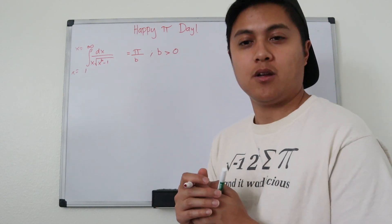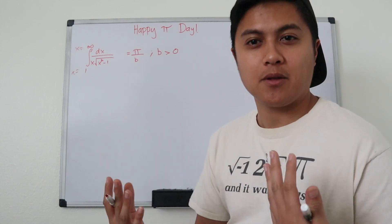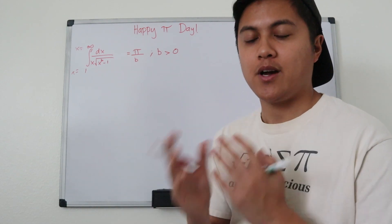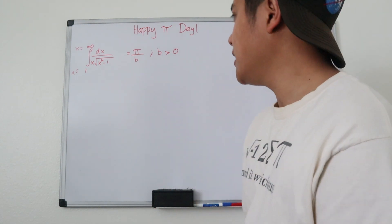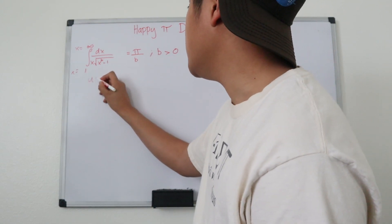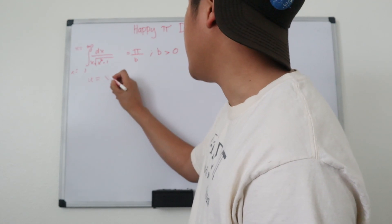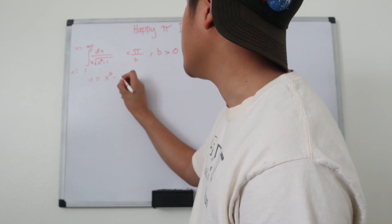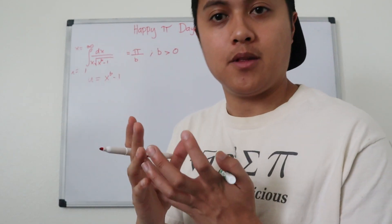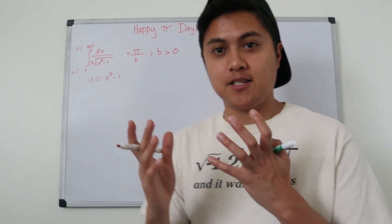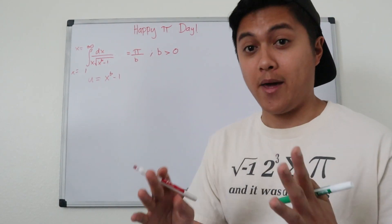I'm going to warn you, there's quite a bit of substitution in this problem, so I'm sorry if it's kind of complicated, but I will try and be as straightforward as possible. The first substitution I'm going to use is u equals x to the b minus 1. We're going to convert this integral from the x domain into the u domain.